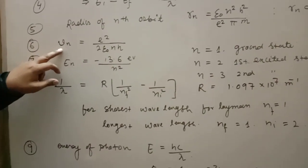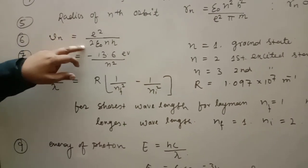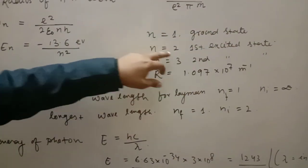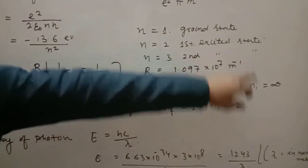Then, velocity of electron in nth orbit: vn is equal to e square by 2π epsilon naught nH. n is equal to 1 ground state, n equal to 2 first excited state, n equal to 3 second excited state.